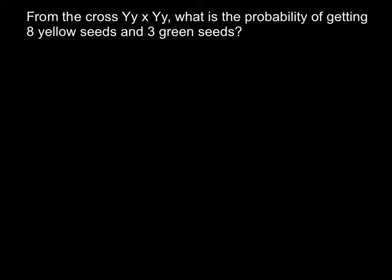First of all, I want to give you the formula we are going to use. We have the total number of events n on top. We have 8 yellow seeds and 3 green seeds. In our formula, on the bottom we put two independent events: the first event will be s, and the number of the second event will be t.